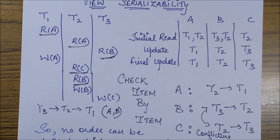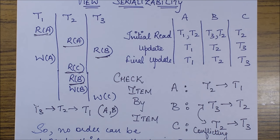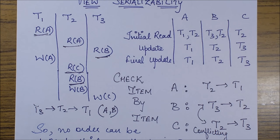Since no serial order can be derived, this schedule is non-view-serializable. It was already non-conflict-serializable, and now it is confirmed non-view-serializable as well. This is in contrast to cases where a schedule may be non-conflict-serializable but still turn out to be view-serializable — a scenario we will discuss in future videos.